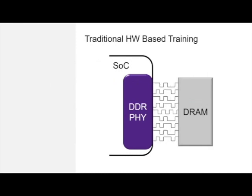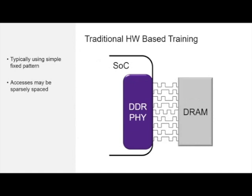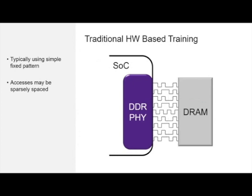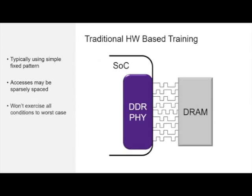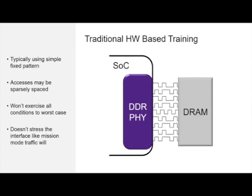This shows an illustration of a traditional hardware-based training algorithm. Typically, it's a very simple pattern — it often has accesses that are sparsely spaced out. So sometimes I'm passing data back and forth between the host and the device, and sometimes I'm not. The problem with this is it doesn't necessarily catch all the conditions to get you to a truly worst-case operating mode. If you're not stressing it in worst case, you're not really getting to mimic what you can potentially see once you start running mission mode applications on your device.